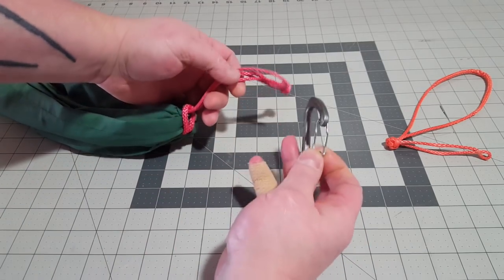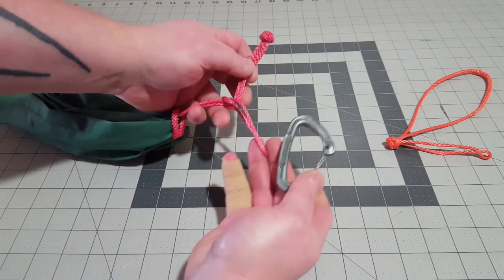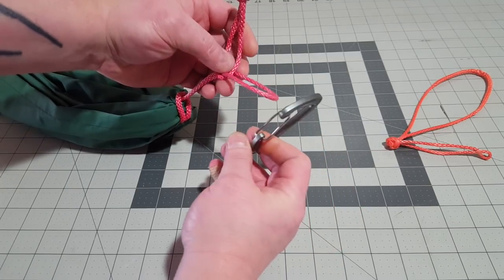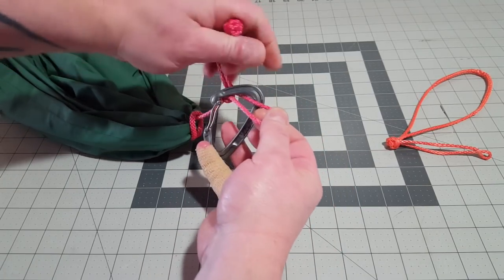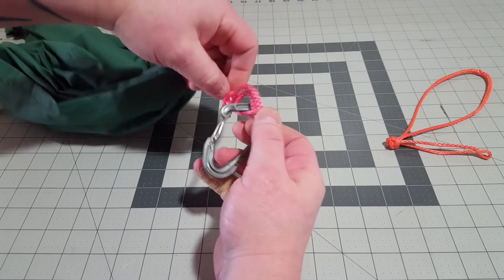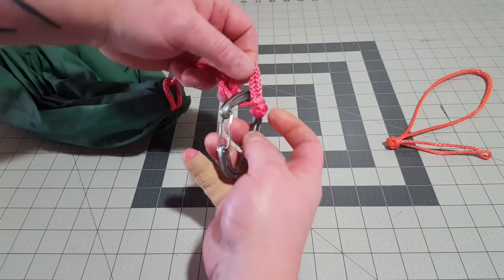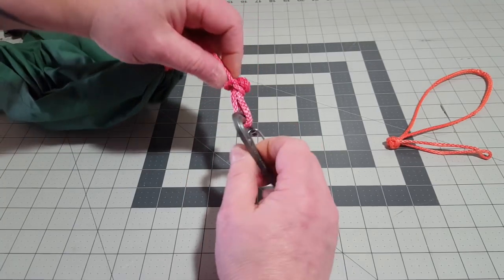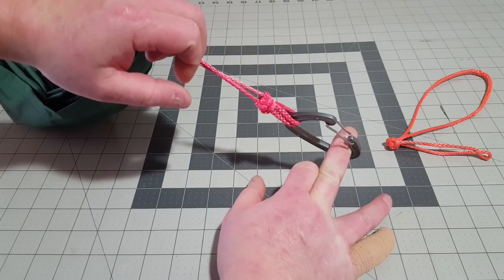You can take, and this part now is a soft shackle. Say this right here was my daisy chain webbing or something else, I can just go like this, put that knot into the loop right there. You notice that loop will close up as that larks head slides down, that loop will close up and I have an instant soft shackle.